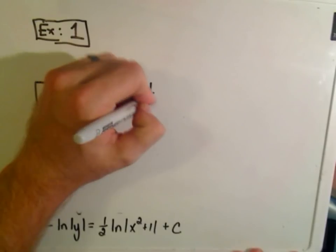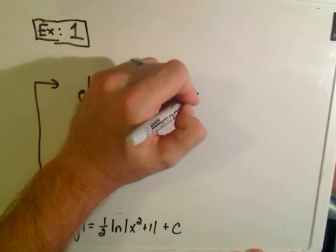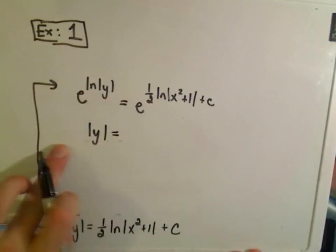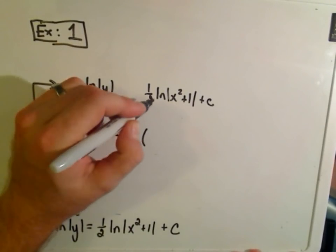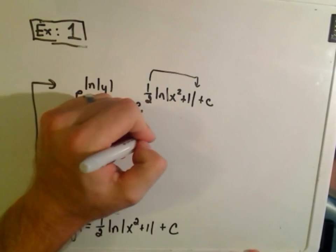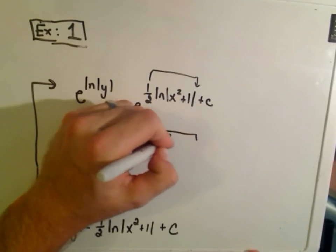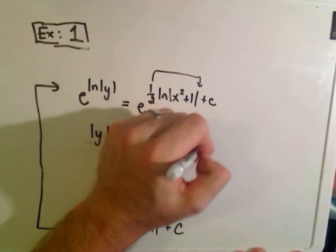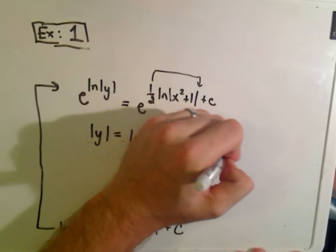So I'm going to take e raised to the natural logarithm of y. And then I'm going to take e raised to the 1 half natural logarithm of x squared plus 1 plus c. So we'll be left with absolute value of y equals. Remember the other trick, too. You can bring coefficients up as exponents on logarithms. So really I'll have the logarithm, but the exponent of 1 half will turn into a square root. So I'll have the natural logarithm of x squared plus 1.